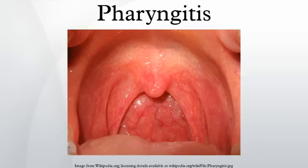Infectious mononucleosis, caused by the Epstein-Barr virus, may cause significant lymph gland swelling and an exudative tonsillitis with marked redness and swelling of the throat. The heterophile test can be used if this is suspected. Herpes simplex virus can cause multiple mouth ulcers.